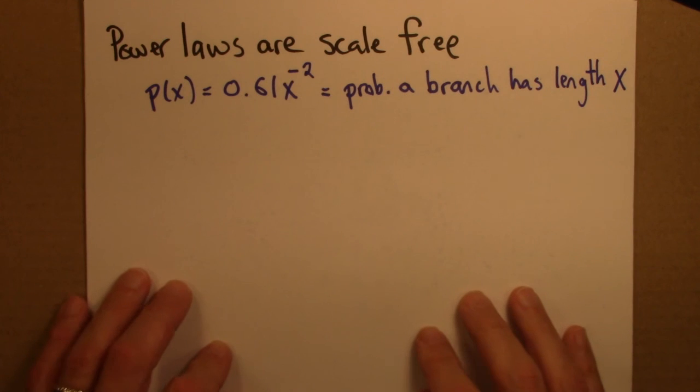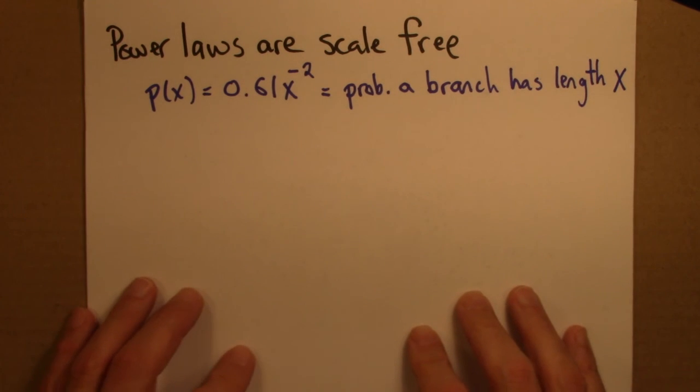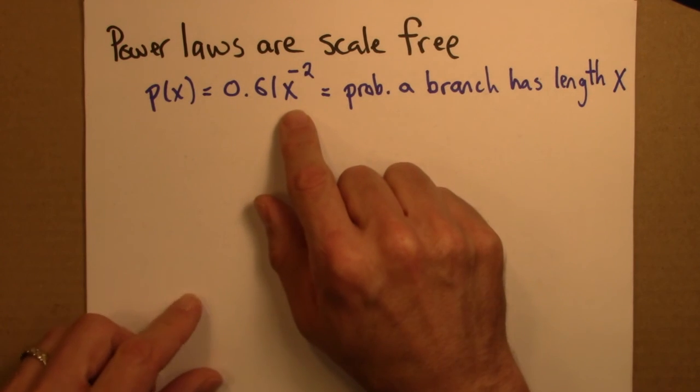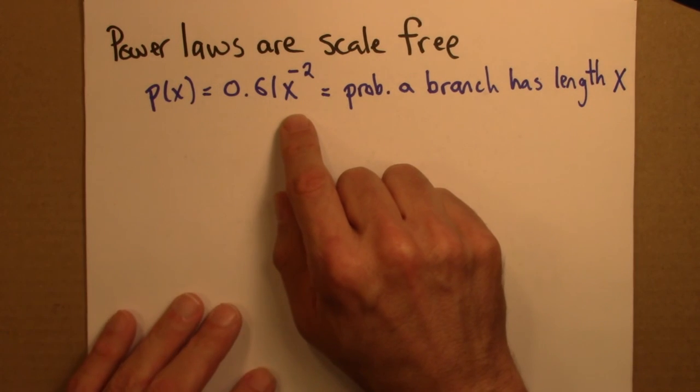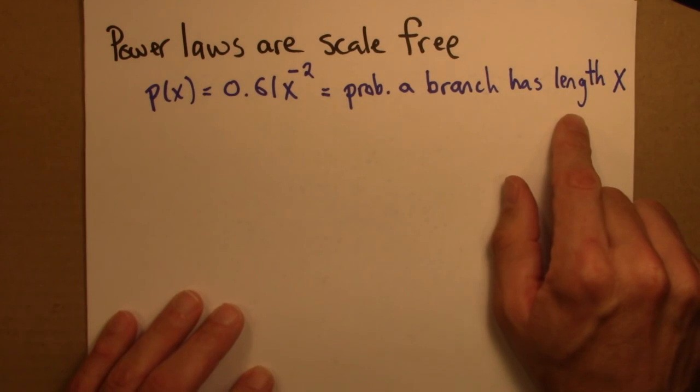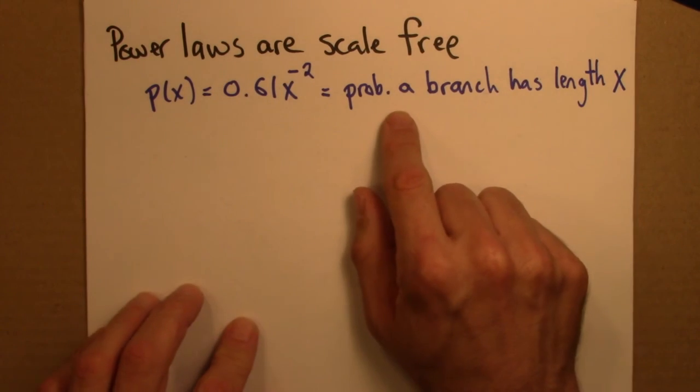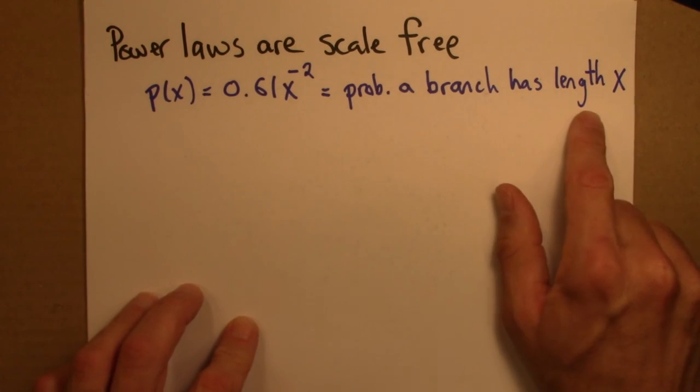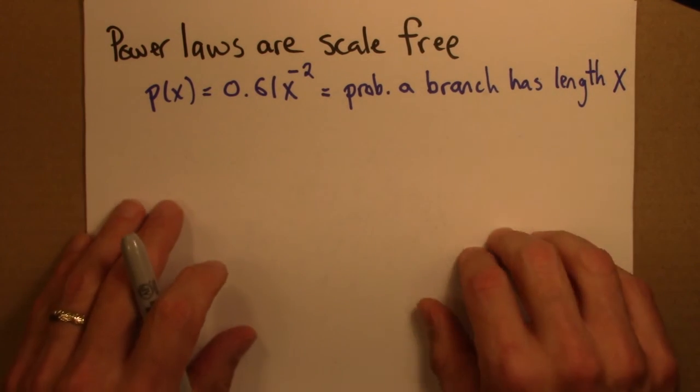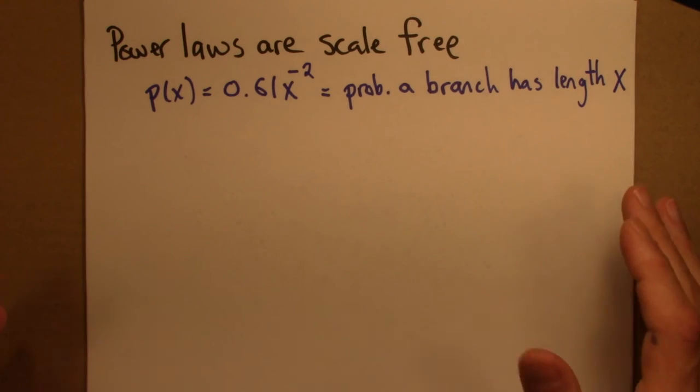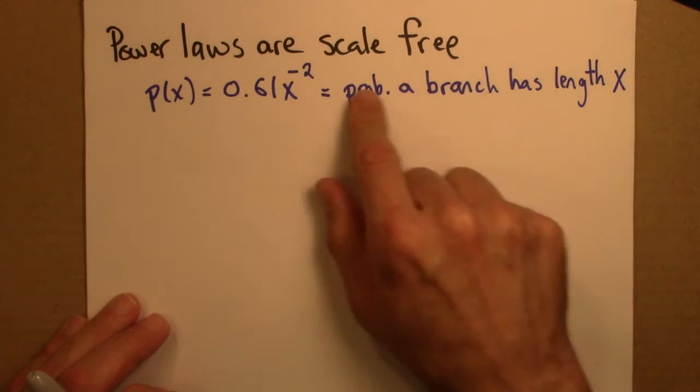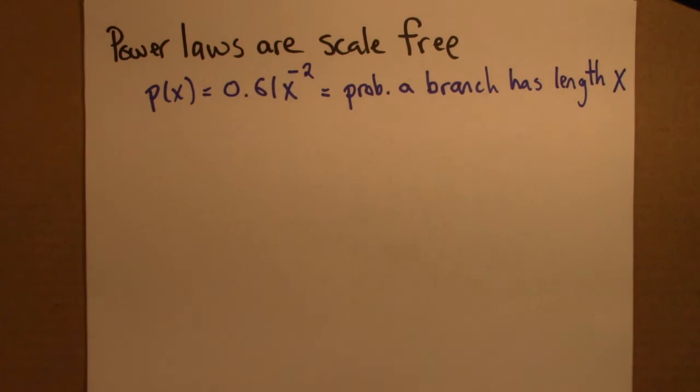Here's another way to think about how power laws are scale-free. So mathematically we're going to work with the same formula. But now instead of thinking about word frequency, I'm going to imagine that this describes a distribution of branches in some tree. So that this expression gives a probability that a branch has a particular length. So let's imagine that you were shrunk or expanded, you don't know your size, and you're looking for clues about scale inside of a tree whose branches are described by this.